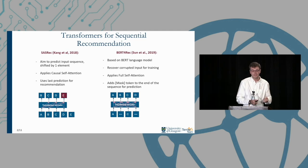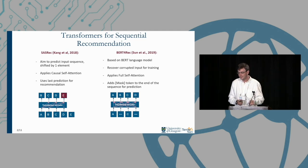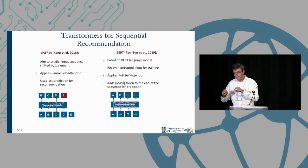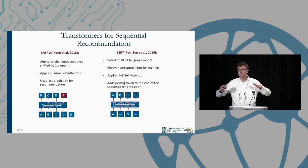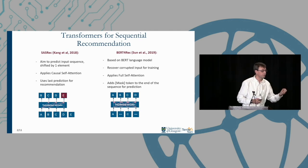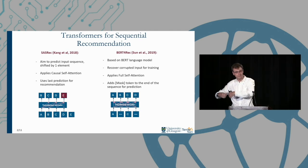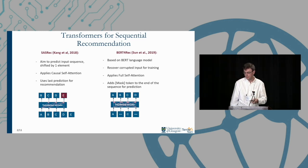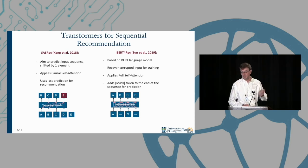BERT4REC, on the other hand, is based on the BERT language model. It uses corrupted inputs by using masking for training and applies full attention — so the attention looks both forward and backwards. To make a prediction, we give it the mask token and ask to see what it is that the model should return. In the original BERT4REC paper, BERT4REC was shown to be significantly better than SASREC.